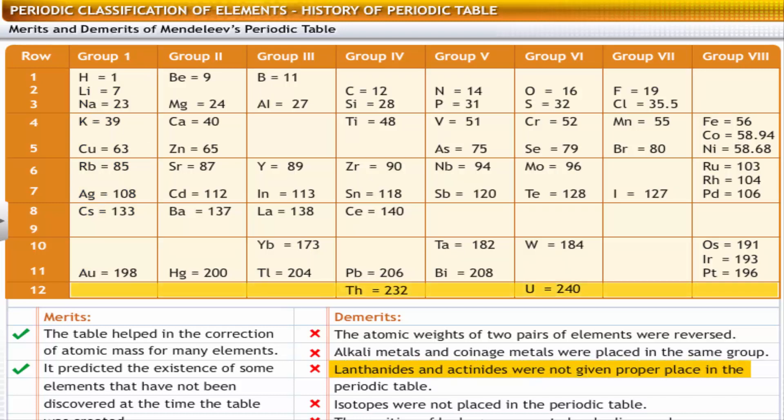Lanthanides and Actinides were not given proper place in the periodic table. Noble gases did not find a place in the periodic table. The table did not clearly indicate the position of hydrogen.